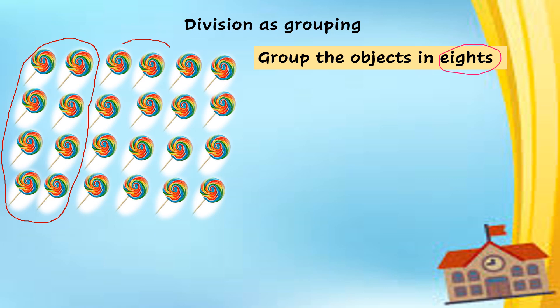There are 8 lollipops in a group. Second one. Like this. And the final is lollipops. So, now, how many groups are there? 1, 2, 3. I get 3 groups.